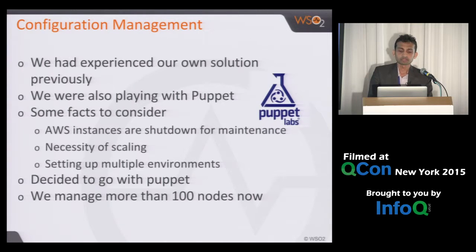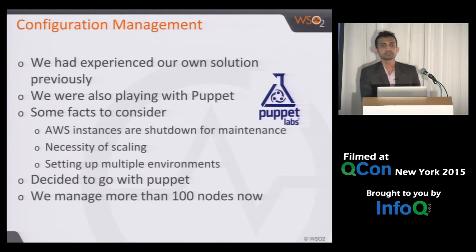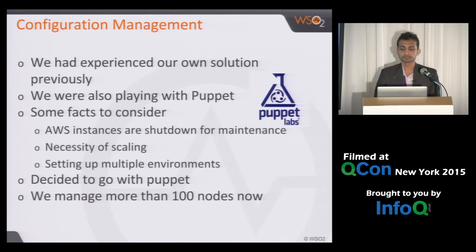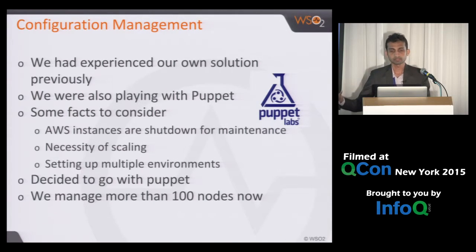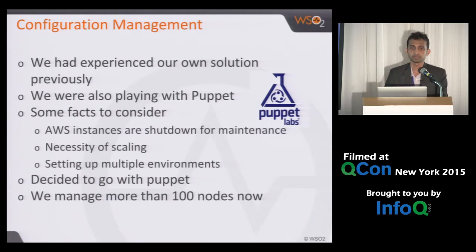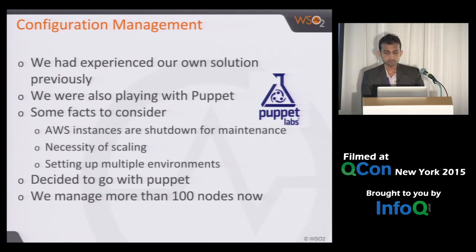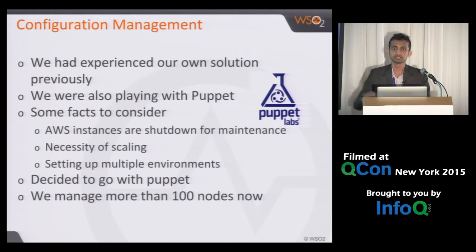Considering all this, we decided to go with Puppet. At the moment we are maintaining more than 100 AWS instances using Puppet. Whenever we want to add a new API gateway to the cluster, I make a request to my DevOps team and they can do it in about five minutes — they just start an AWS instance, run some Puppet commands, and Puppet does the rest. That's how we manage the configuration.